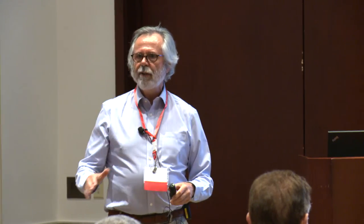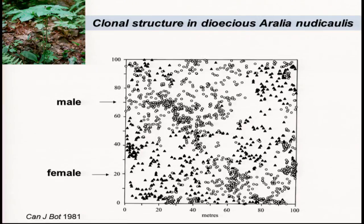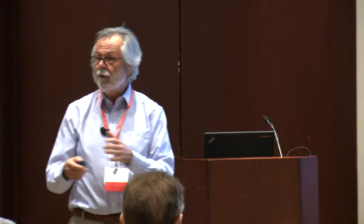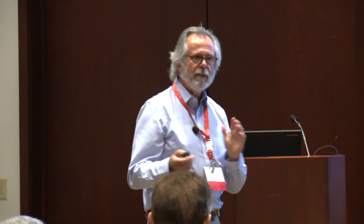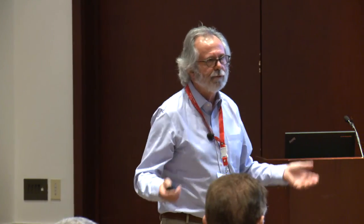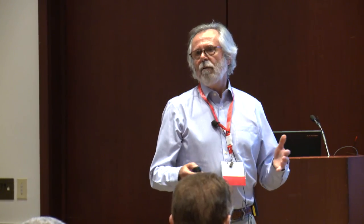What we did find, which was really interesting, was an association with shade — the light levels in the forest. When we look at this, we don't know this is one big male clone — it could be four. We didn't have genetic markers in those days. What we discovered at the ramet level is that in areas of high shade, males could flower repeatedly whereas females couldn't. There was a difference between males and females in the propensity to flower depending on shade level, presumably associated with the costs of reproduction — females make fruit, males don't.